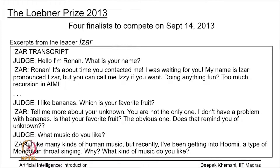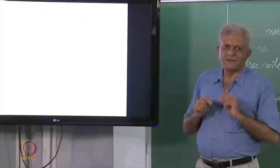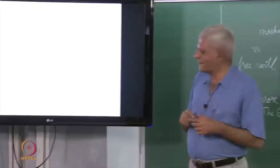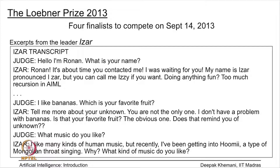At a later point, the judge says 'I like bananas — which is your favorite food?' The program responds 'Tell me more about your unknown.' This is a trick the program is employing to answer a question it cannot answer easily. You are not the only one — you have to build in these kinds of tricks. Human beings do that too when they are stalling. The program then responds: 'I do not have a problem with bananas. Is that your favorite food?'